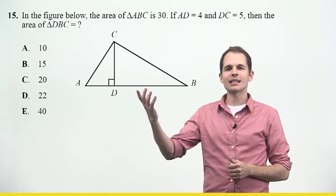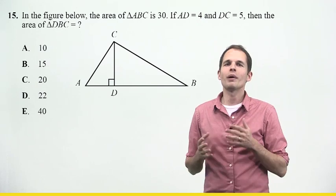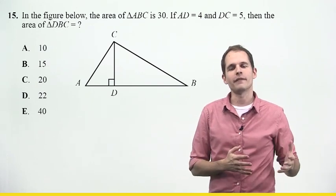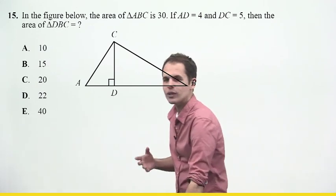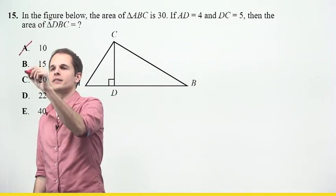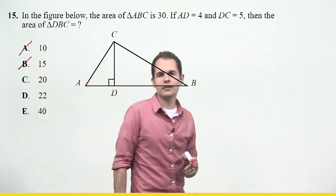And it says DBC, and that's definitely the larger one. So, my answer has to be larger than 15. And if I know that's true, then I can get rid of A, which is less than 15, and B, which says it's equal to 15.